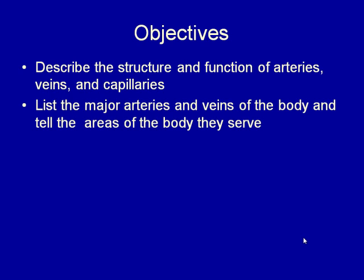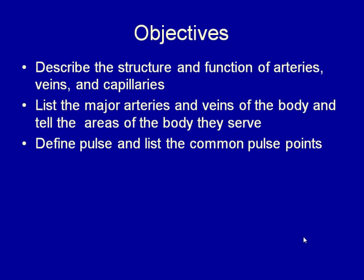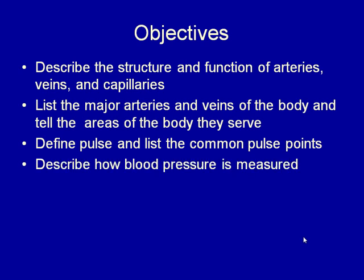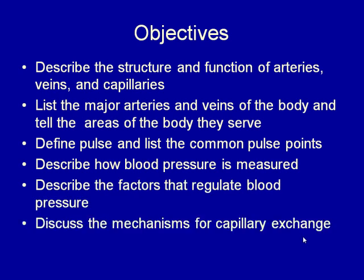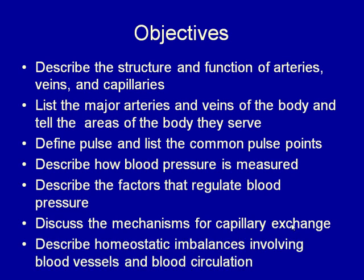List the major arteries and veins of the body and tell the areas of the body they serve in general. Define pulse and list the common pulse points. Describe how blood pressure is measured, the factors that regulate blood pressure, and discuss the mechanisms for capillary exchange. Describe homeostatic imbalances involving blood vessels and blood circulation.